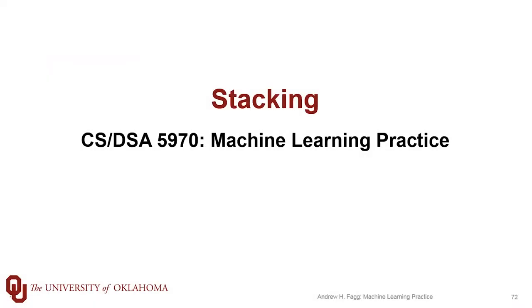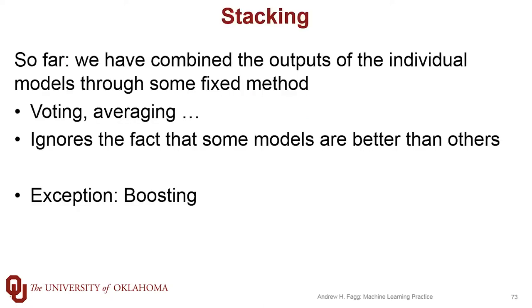For the most part with the ensemble methods that we've been talking about so far, we've had very fixed heuristic methods for combining the predictions that are being made by the individual ensemble members in order to create the prediction by the entire ensemble. So if we're dealing with classification, we have some sort of a fixed voting scheme where every ensemble member gets to vote with equal weight. In the case of regression, the simple heuristic is just to average the predictions that are made by the individual ensemble members.